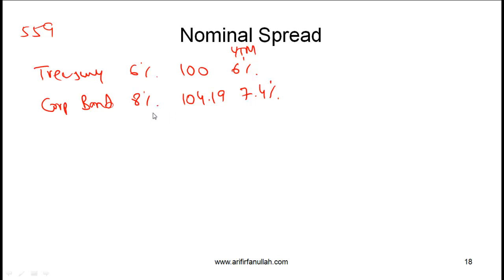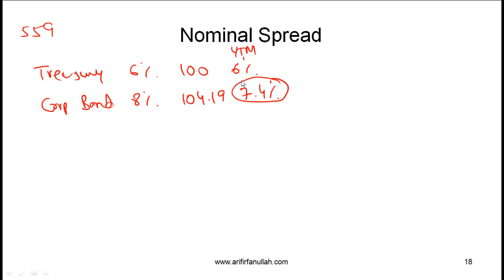This is a premium bond because it is selling above par, and the YTM is 7.4%. As a refresher, a YTM of 7.4% means that if you hold this bond till maturity, the yield you are expecting is 7.4%. The nominal spread is the difference between the yield on the corporate bond and the yield on the treasury bond.